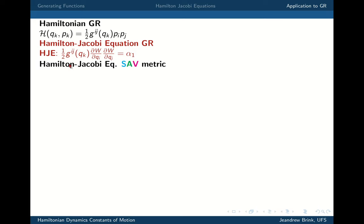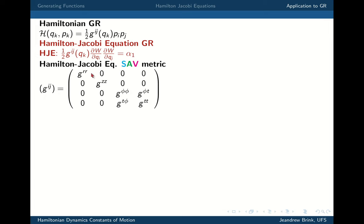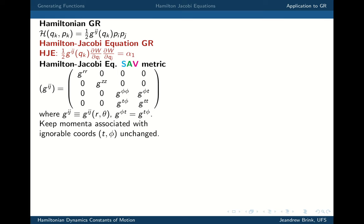We can specialise further to the SAV metric. For that case you have a specialisation — writing down the upper metric components — it's diagonal in two coordinates and has a block system. In the first lecture I used rho and Z; in this lecture I've switched to rho and R and theta to get to Kerr, but they're just variables. The most general SAV metric has functions fixed by the field equations, which we won't derive just yet.